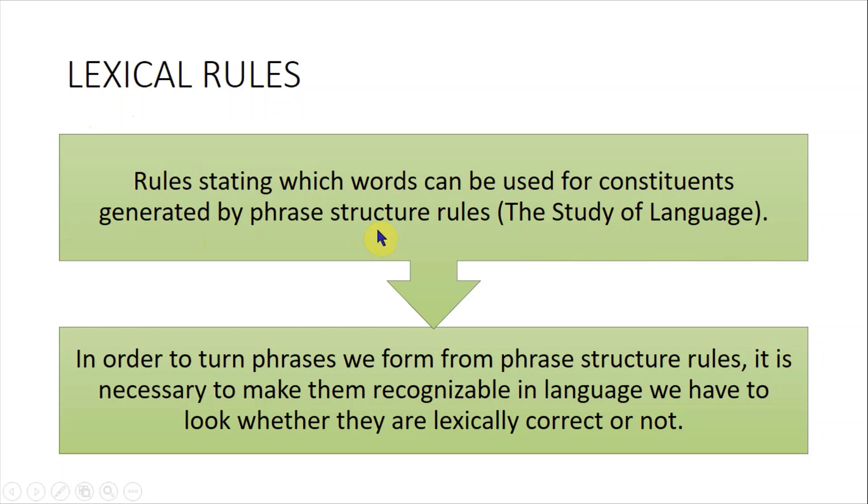In phrase structure rules, we learned how a phrase can be constructed and what comes first and what comes later. For example, in a noun phrase, if there is an article, the article comes first and then the noun comes after.